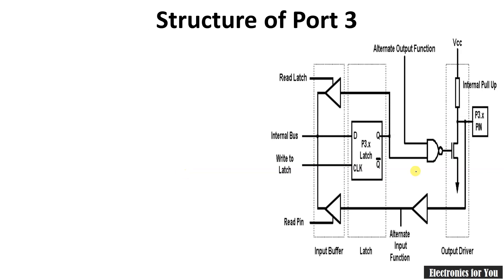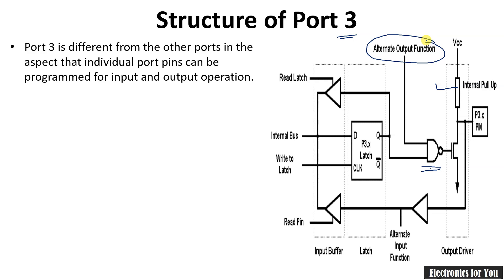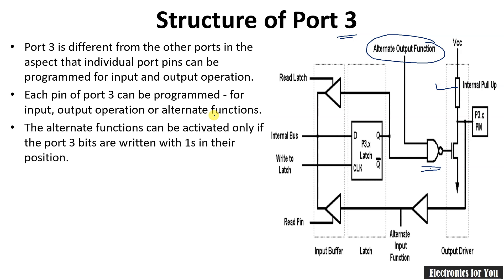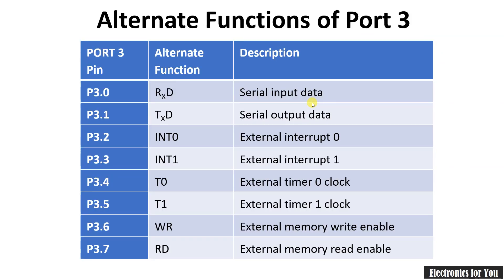Port 3 is very special because each pin works as an alternate function. It also has an internal pull-up resistor. The alternate function output is available as shown in the port structure. Each pin of port 3 can be programmed for input/output operation or the alternate function. The alternate functions can be activated only if the port 3 bits are written with ones — if 1 is written, it works as the alternate function.